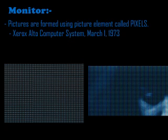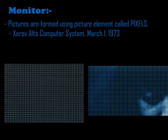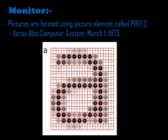A computer monitor has small dots arranged in vertical and horizontal rows. These dots form the picture on the monitor. This dot is called a picture element, or pixel. For example, if you want to display the letter A, only the dots shaped like A are colored, so we can see the letter A on the monitor.